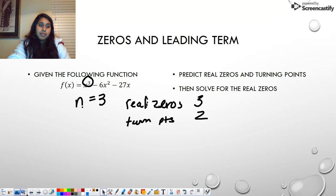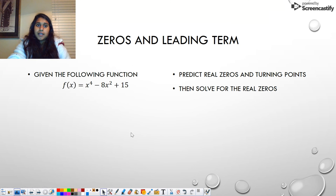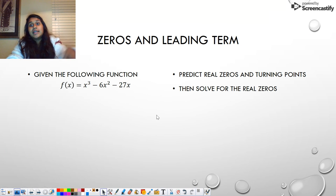We do the exact same thing. You factor it out and you set it equal to zero and you solve. And then you can identify how many real zeros you have. We have a predicted amount of three, but how many do you actually have?